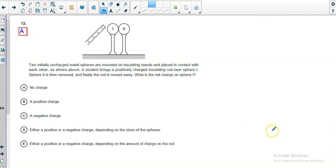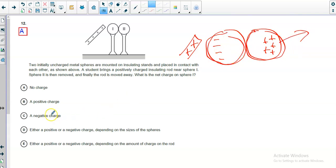Two initially uncharged metal spheres are mounted on insulating stands and placed in contact with each other. The student brings a positively charged insulating rod near sphere 1. Sphere 2 is then removed and the rod is finally moved away. What's the charge on sphere 1? This is sort of like grounding when they're touching. Here are the two spheres and they're touching, and the rod is close. Positives are going to get as far away as they can, leaving extra negatives closer. While the rod's there, if you take this one away, you're taking away positive charges and leaving this one with a negative charge.